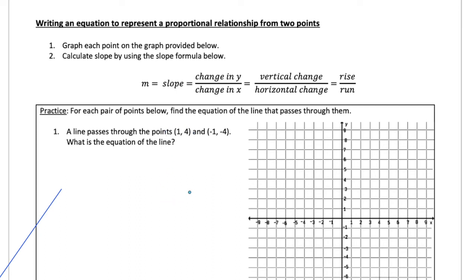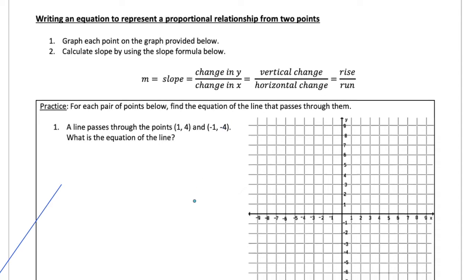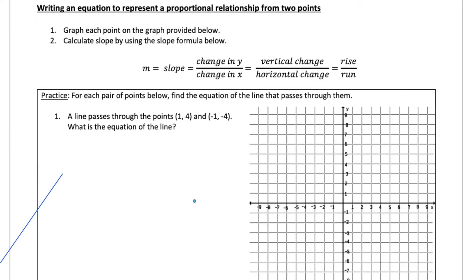In today's video we're focusing on proportional relationships on the graph. All those skills we learned — figuring out if a point is on a line or building a table of values with a rule — we can now put them onto the graph to see what those graphs look like. Proportional relationships always go through the origin, so all graphs today will pass through point (0, 0).